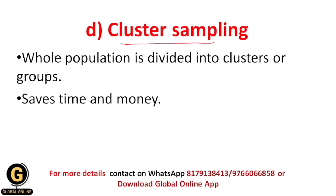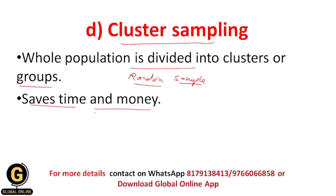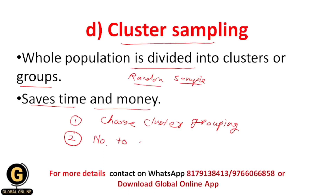The fourth type is cluster sampling. Here the whole population is divided into clusters or groups, and a random sample is taken from these clusters, which are then used for the final sampling procedure. It is advantageous for researchers whose subjects are spread over large geographical areas because it saves time and money. The stages are: first, choose a cluster grouping for the sampling frame such as type of company or geographical region; second, number each of the clusters; and third, select the sample using random sampling.